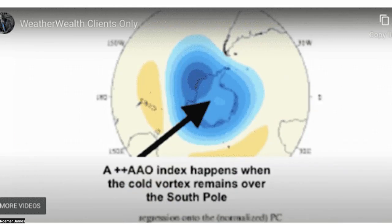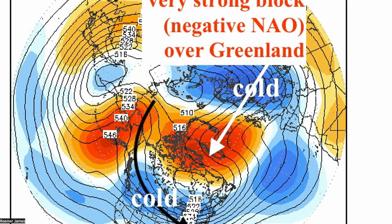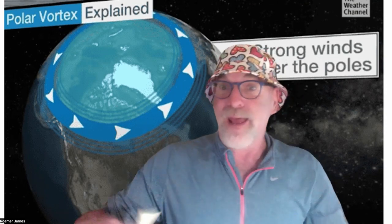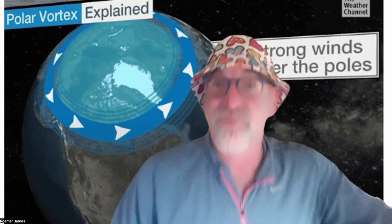Let's go back to the weather pattern. We're going to see a negative NAO — a block over Greenland — the next few weeks. As a result, natural gas prices bottomed earlier this week, and other energy markets with heating oil and similar are going to be opportunities for spreading various markets based on the cold, including in Europe. A negative NAO is the opposite of a positive NAO. A positive NAO and a positive Arctic Oscillation Index keeps the polar vortex with strong winds over the North Pole.